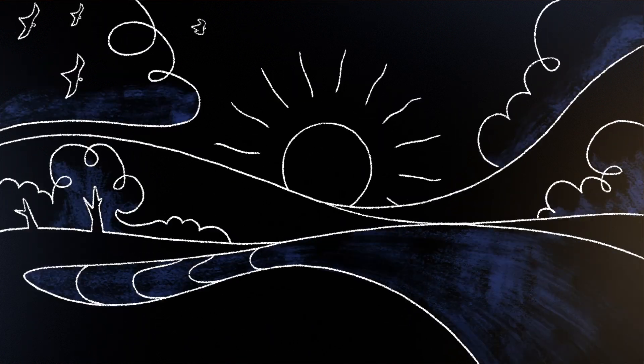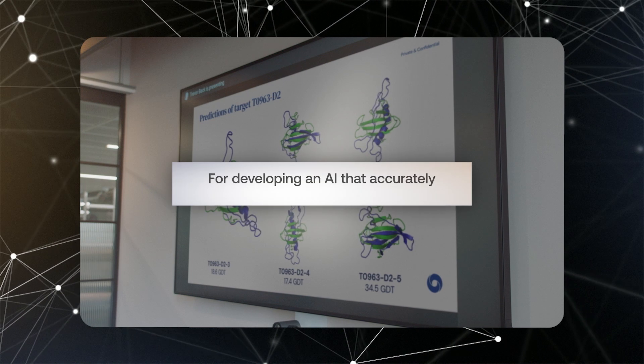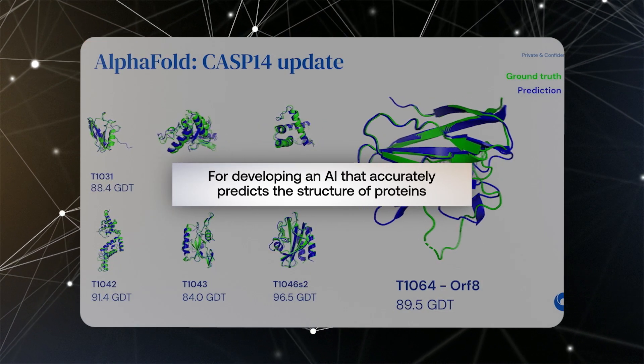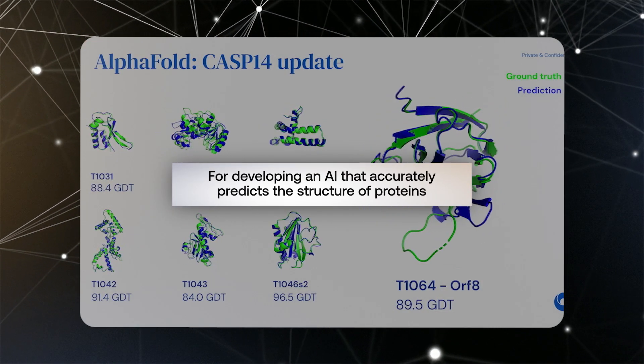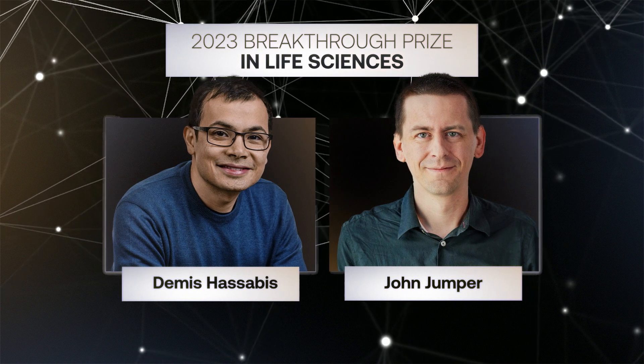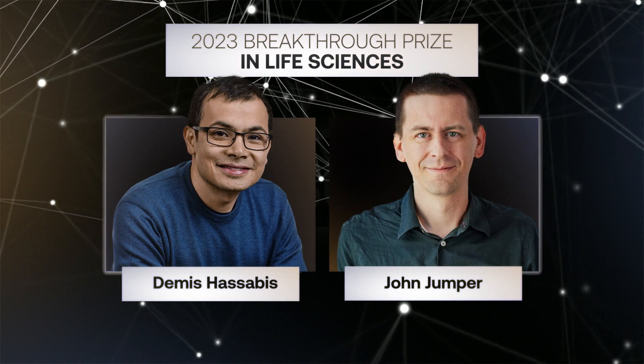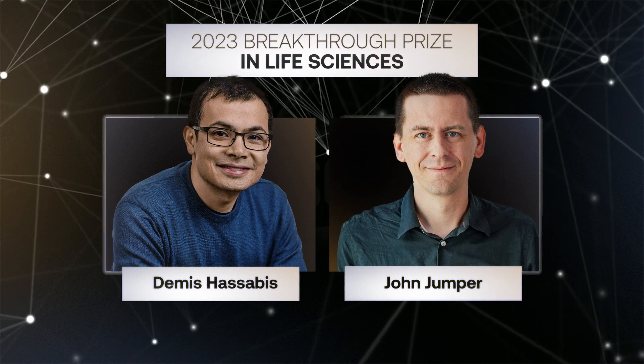For developing an AI that accurately predicts the structure of proteins, Demis Hassabis and John Jumper win the 2023 Breakthrough Prize in Life Sciences.